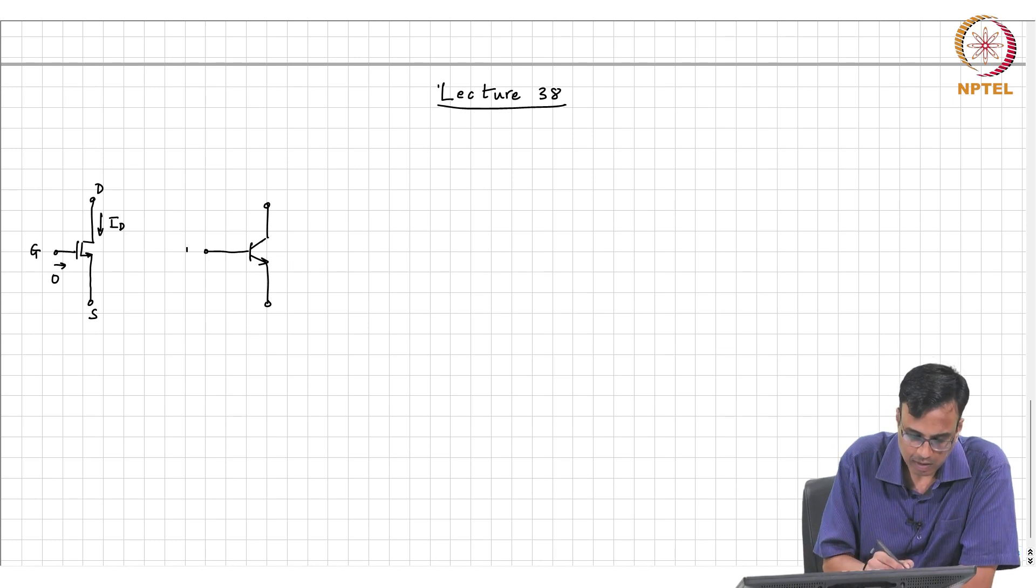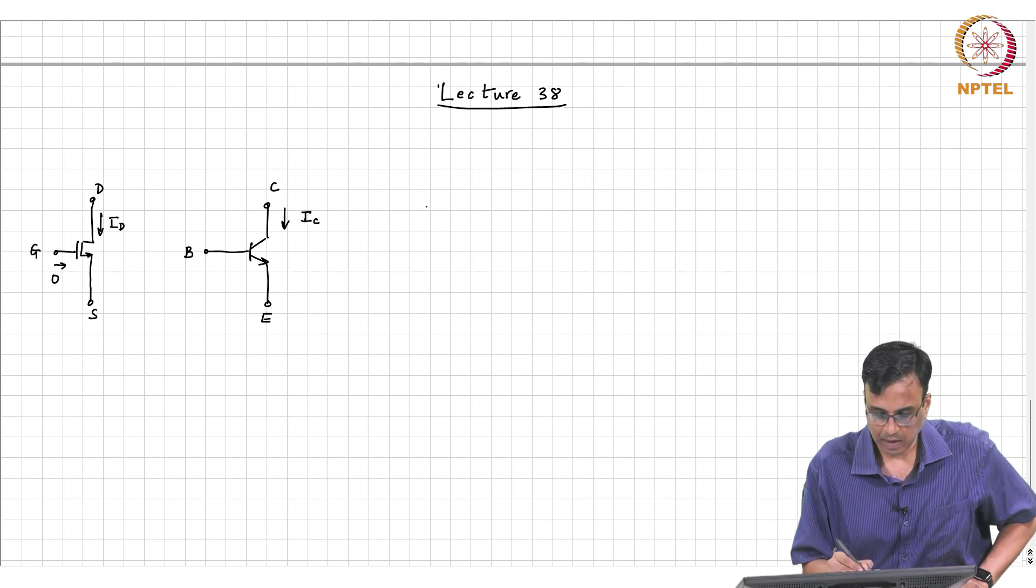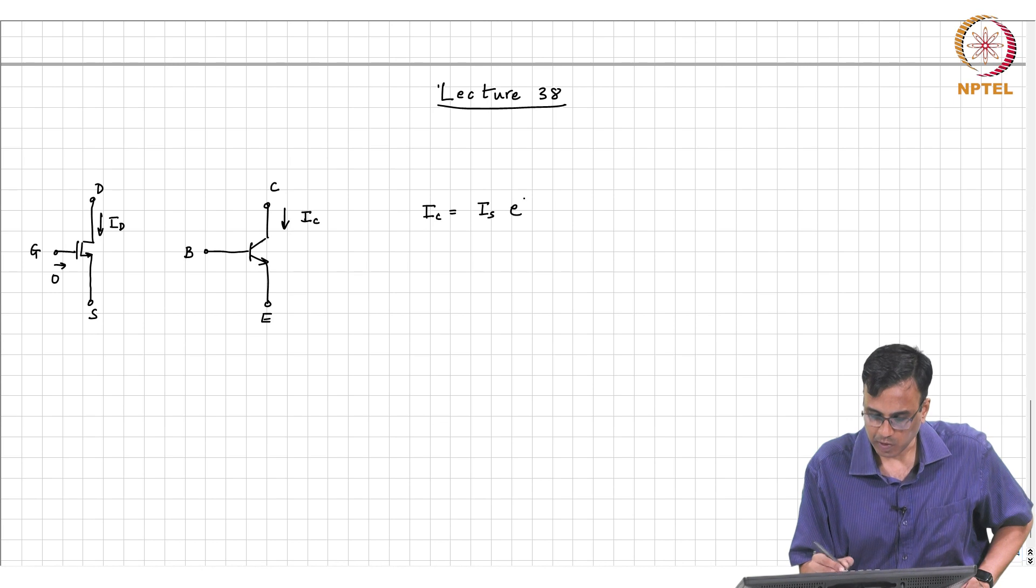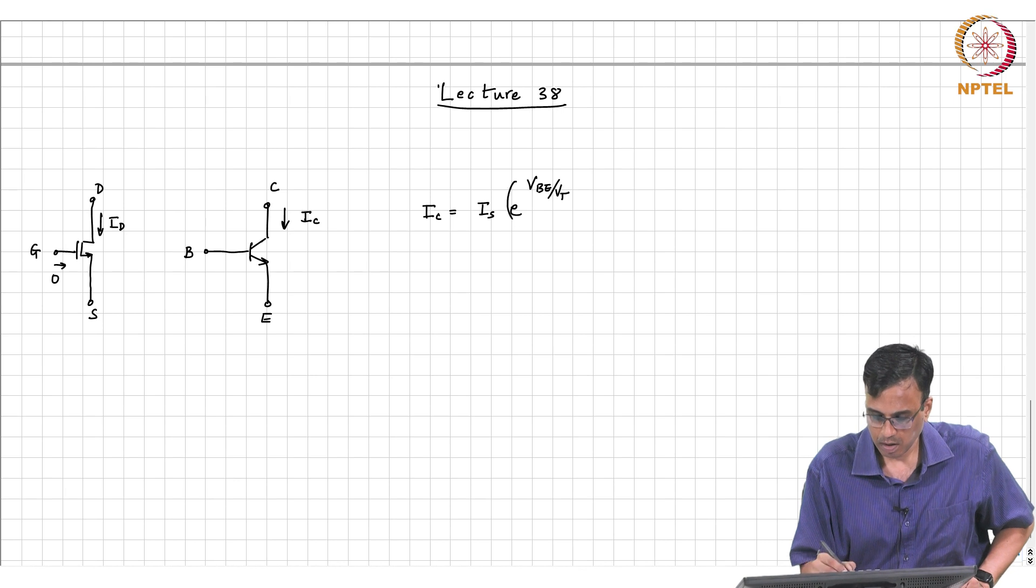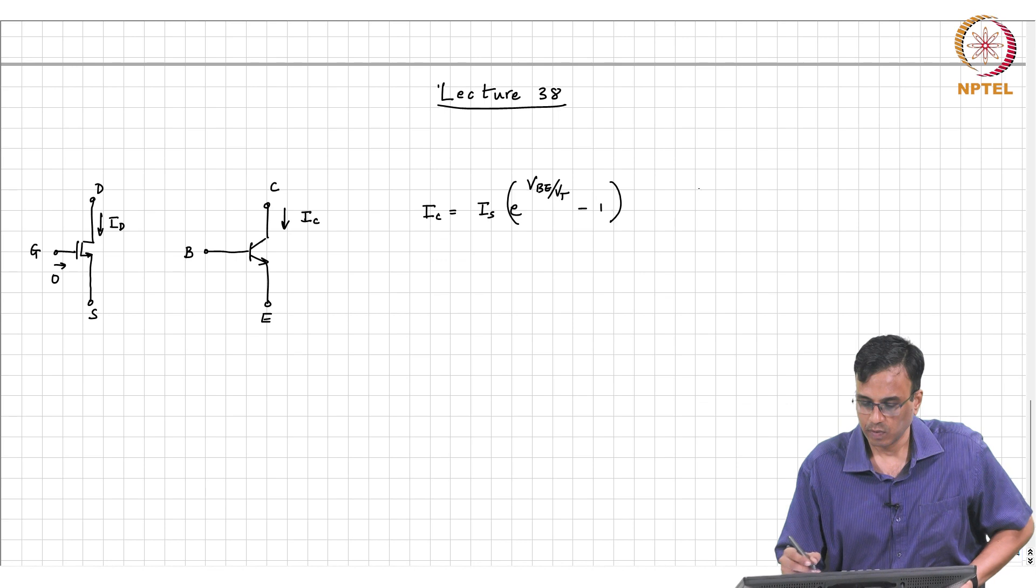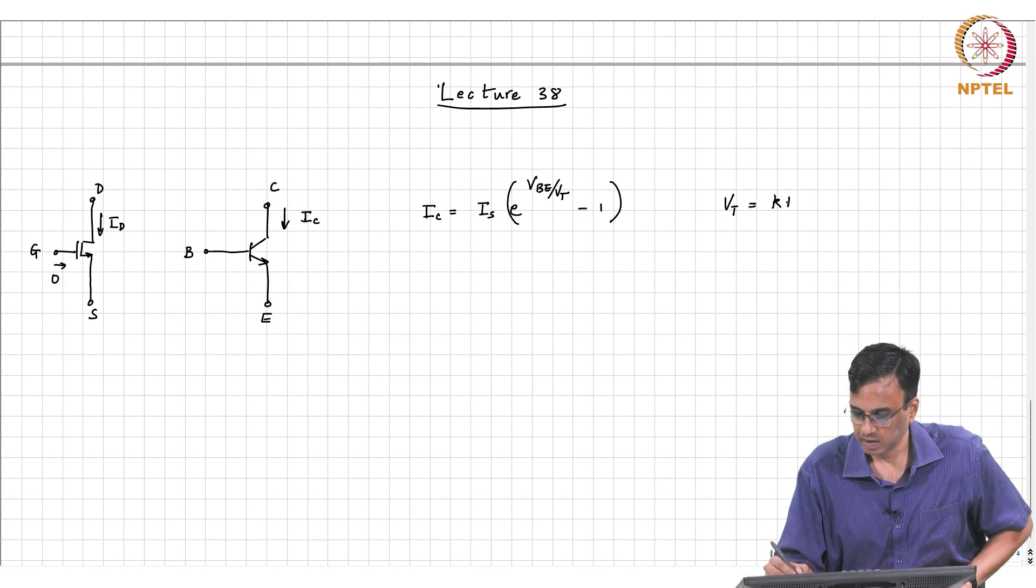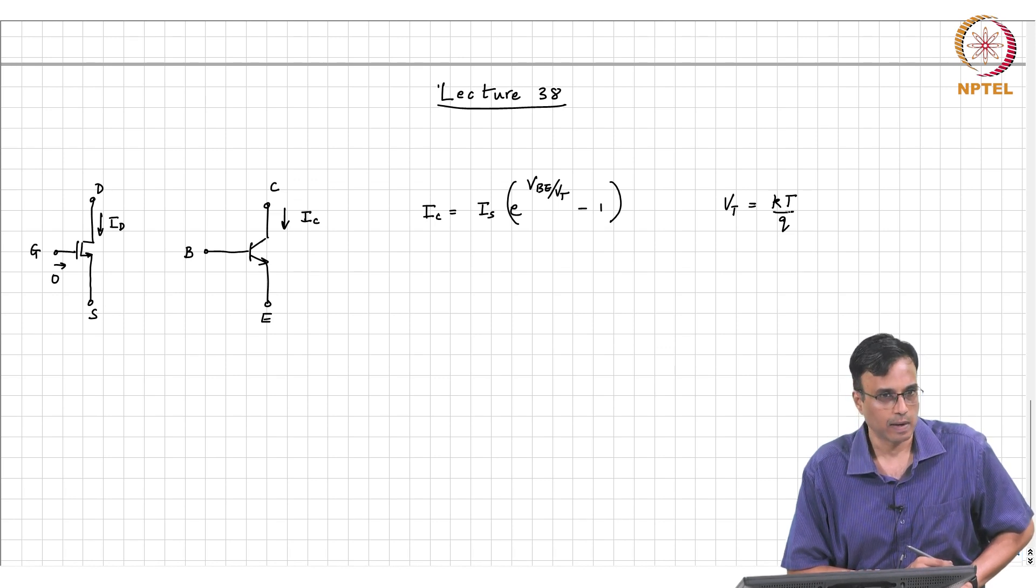Now in the bipolar transistor, this terminal is called the base, this is called the emitter, and this is called the collector. The collector current IC is related to the base emitter voltage as IS exponential VBE by VT minus 1, where VT in the bipolar case is the thermal voltage KT over Q. It is not to be confused with the threshold voltage of the MOSFET.